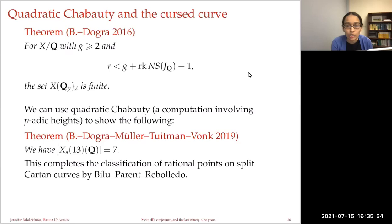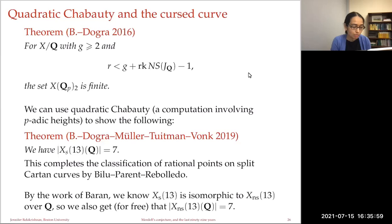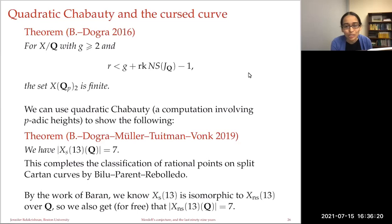In joint work with Dogra, Mueller, Tuitman, and Vonk, we used quadratic Chabauty — computations involving double integrals and solutions to p-adic differential equations coming from p-adic heights — to show that the split Cartan modular curve of level 13 has just the seven rational points that Galbraith had found earlier. This completes the classification of rational points on the split Cartan curves by Bilu-Parent-Rebolledo, and since the split Cartan curve of level 13 is isomorphic over Q to the non-split Cartan curve of level 13, we also know the rational points on that curve.